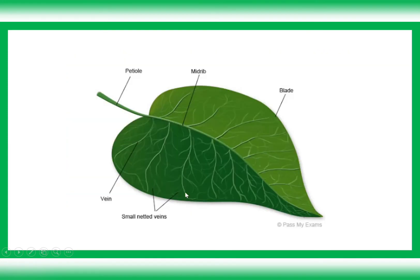Venation is how the veins are arranged in a leaf — they can be parallel or in a network. The main vein or midrib carries phloem and xylem vessels for transport. The petiole supports the leaf and grows at an angle towards sunlight so the plant can absorb maximum sunlight.